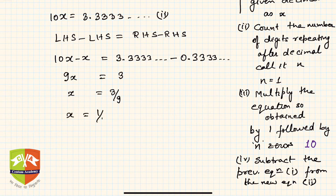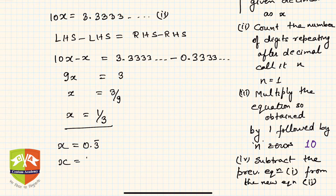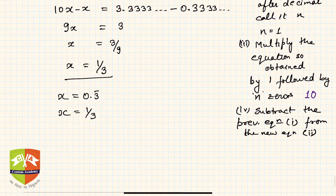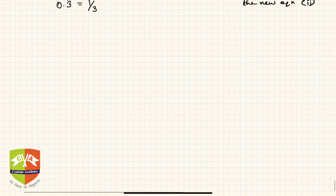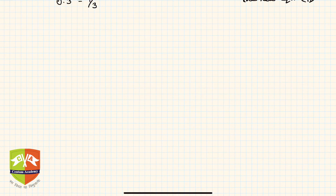Reducing 3 by 9 to its simplest form gives 1 upon 3. So x was 0.3 bar, and by calculation x equals 1 upon 3. Hence we can write 0.3 bar equals 1 upon 3.